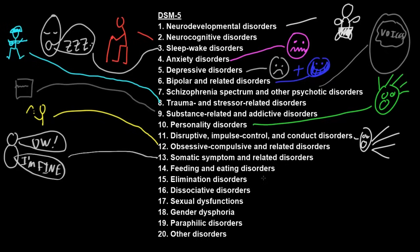Feeding and eating disorders involve distress or disability from mental or behavioral abnormalities related to food. Disorders in this category include anorexia nervosa, where a person takes in an insufficient amount of food even when they are well below their healthy body weight. Another common disorder in this category is bulimia nervosa, which involves binge eating and purging.